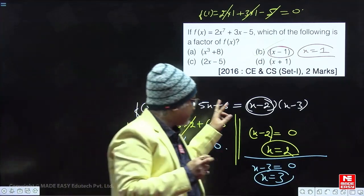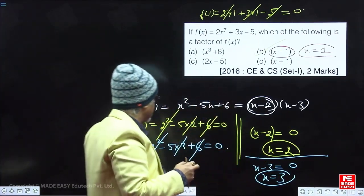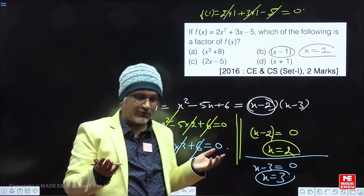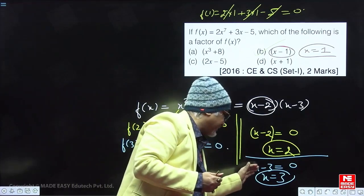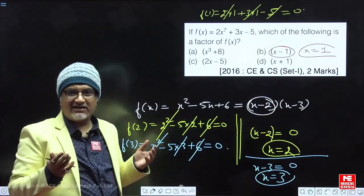If x minus 2 is a factor of the equation, on putting x minus 2 is equal to 0, on putting x equal to 2 in the equation, the equation is becoming 0. On putting x minus 3 is equal to 0, on putting x equal to 3 in the equation, it should also become 0. Similarly,